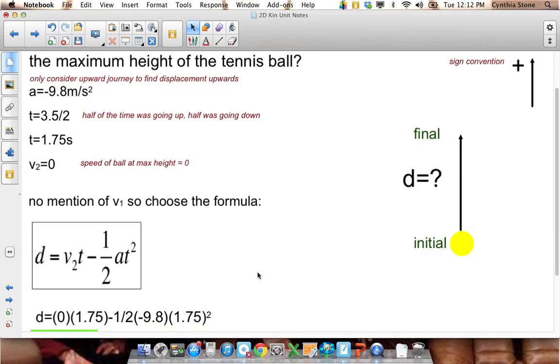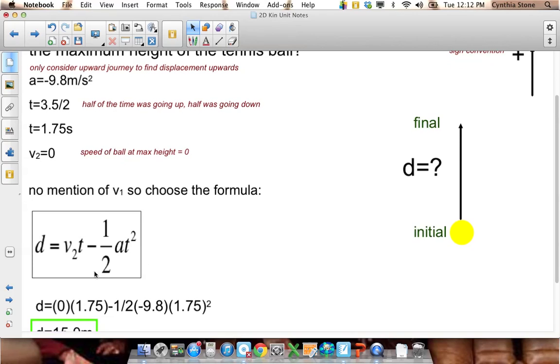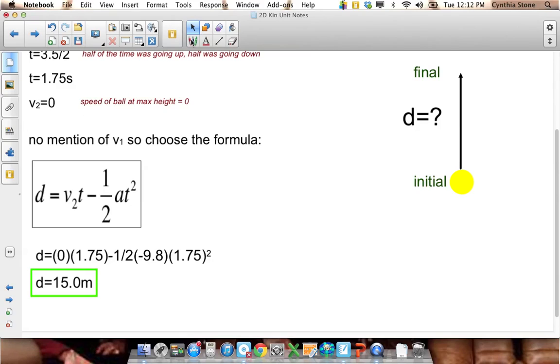So we need to choose one of the kinematic formulas. We're looking for displacement, and we don't know v₁, we don't know the speed when it leaves Ferd's hand. So we're going to choose this one because there's no mention of v₁. Substitute, solve, the thing goes 15 meters in the air, which is a pretty good throw for Ferd.